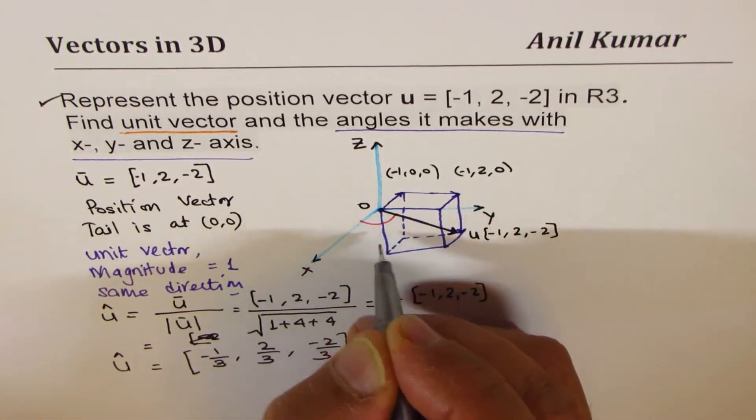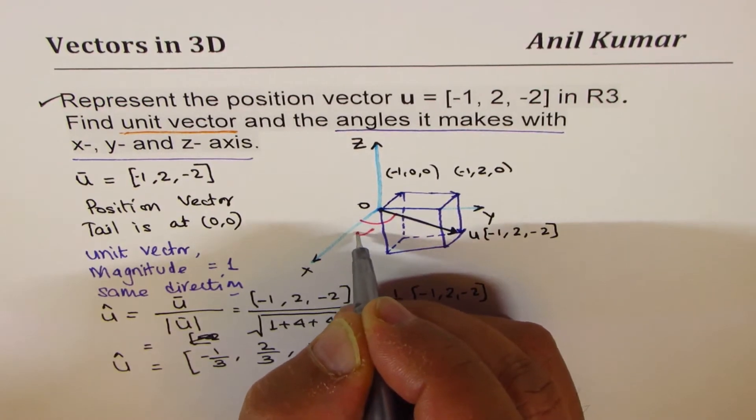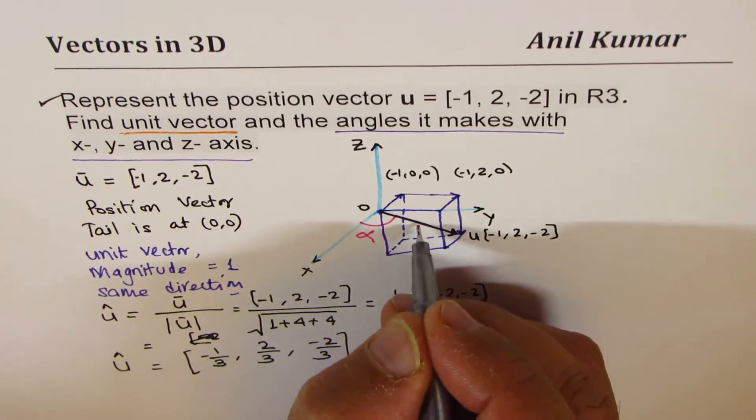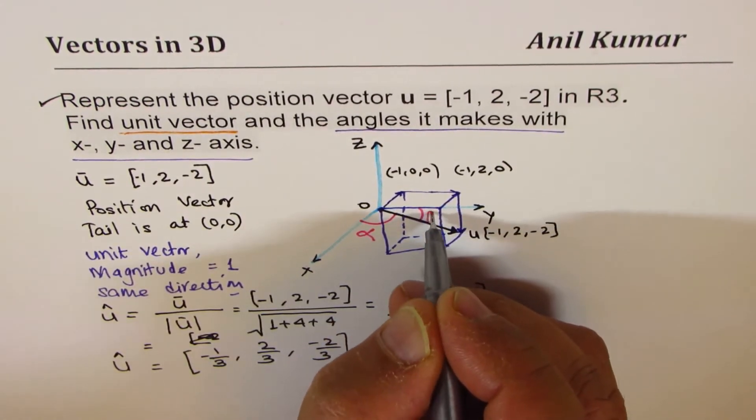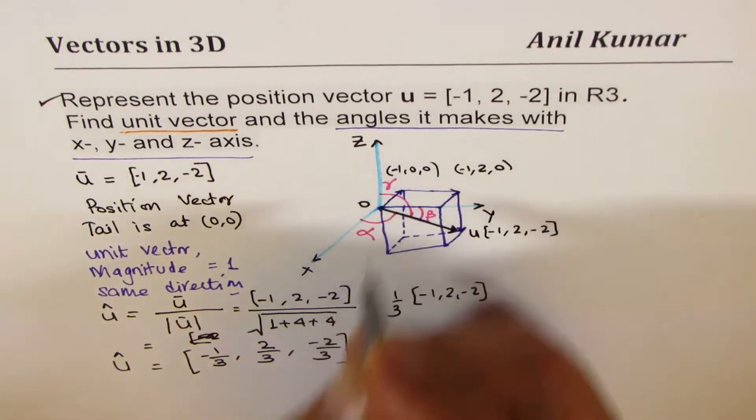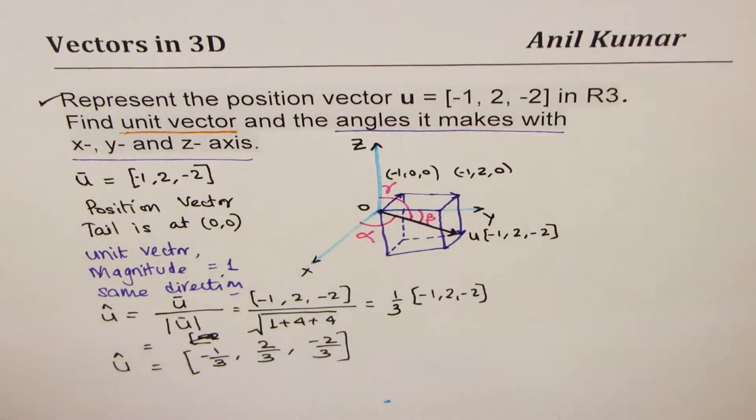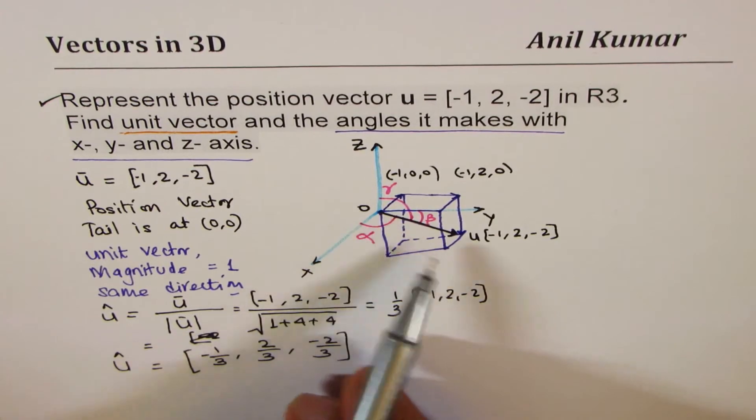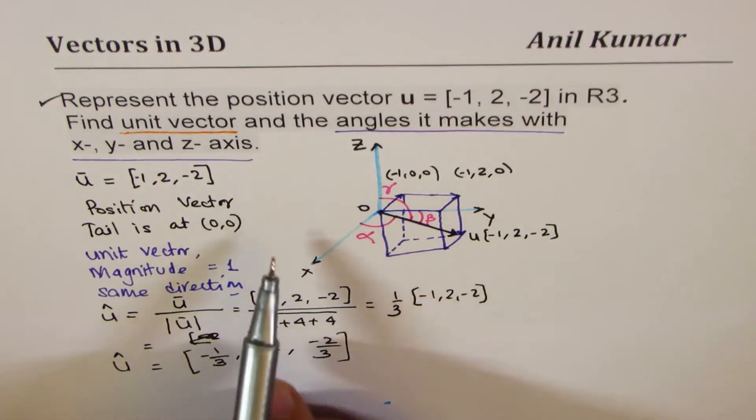We'll call this x angle as alpha, that's standard, with y, beta. And with z, we call this as gamma. So, alpha, beta, and gamma are the three angles which a vector will make with each axis.